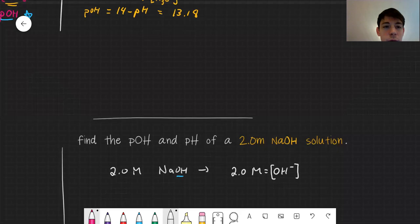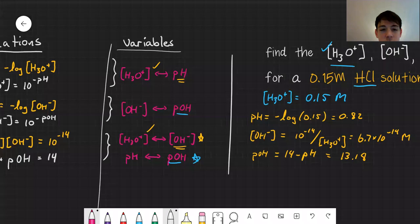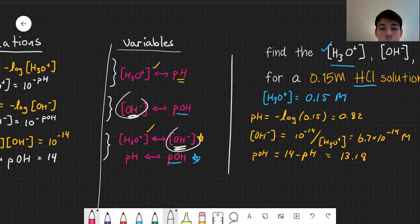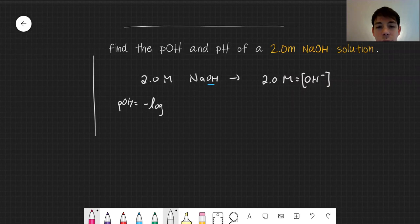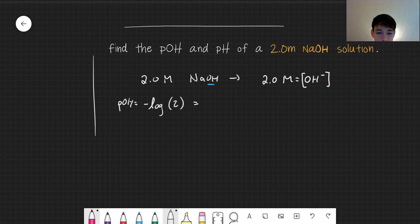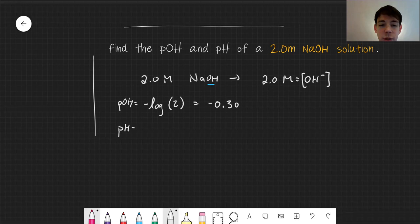Jumping back to our expressions, we can use any of our expressions that require us to know OH minus. This problem is asking me to solve for pOH, so I'm going to use this one. pOH is negative log of 2. That's my pOH. Next, now that I know pOH, I can use my expression that pH plus pOH equals 14. So pH must equal 14.3.